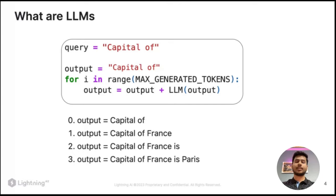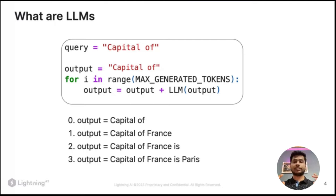I will iterate over maximum generated tokens, which basically defines the number of generated words. When I feed 'capital of' to my large language model, it will predict the next word — one of a country like France — based on some probability. I'll take the newly generated sentence 'capital of France' and feed it back to the LLM, which will produce the next word 'is'. Again I feed the whole string and it produces 'capital of France is Paris'.